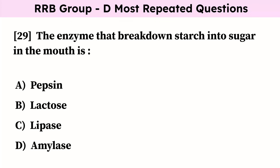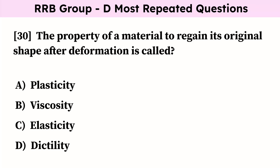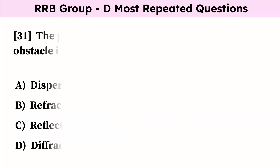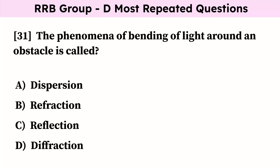The enzyme that breaks down starch into sugar in the mouth is? Correct answer is amylase. The property of a material to regain its original shape after deformation is called? Correct answer is elasticity. The phenomenon of bending of light around an obstacle is called? Correct answer is diffraction.